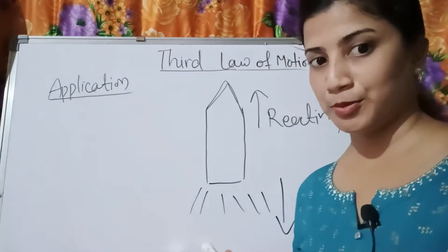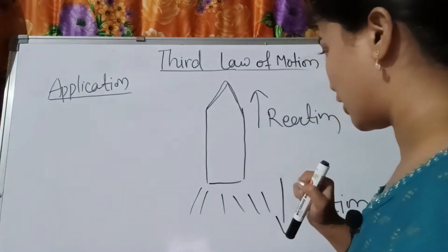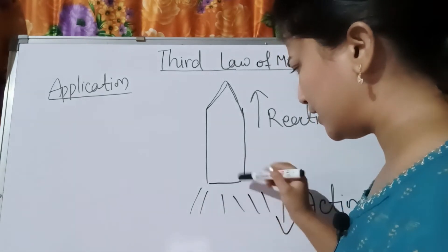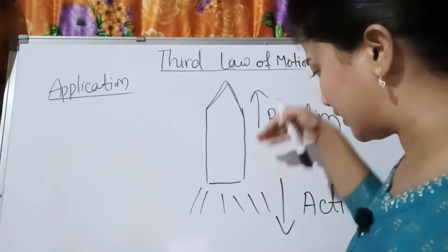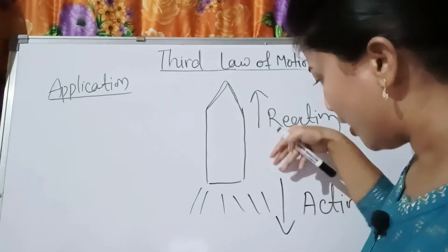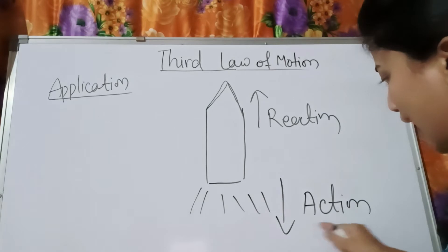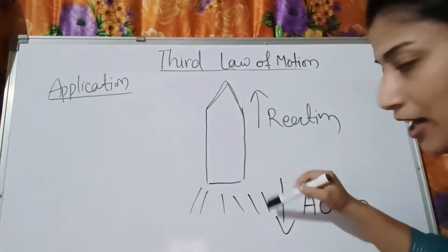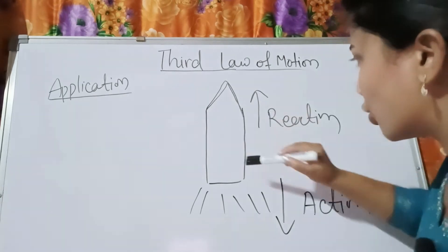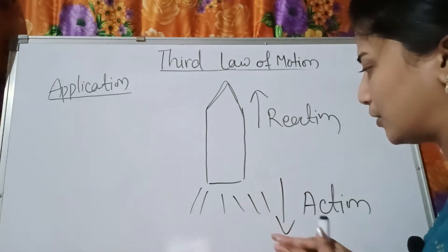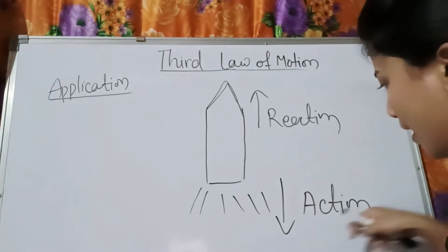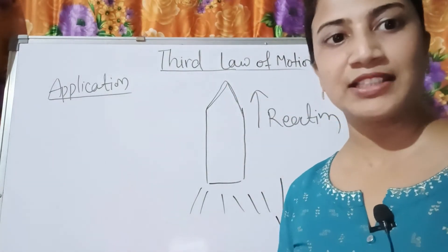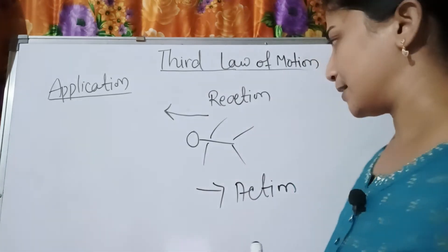The second example is a rocket. When a rocket is launched, the fuel burns and the exhaust — gas, fire, and smoke — moves downward. This downward movement of exhaust is the action. In reaction, the rocket moves upward. This is another application of Newton's third law.